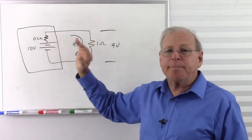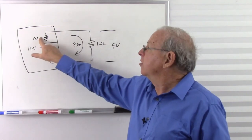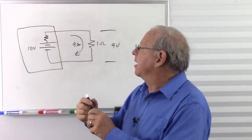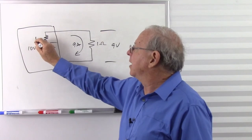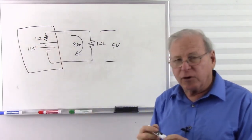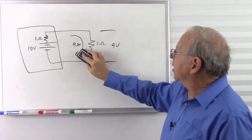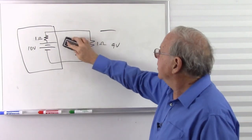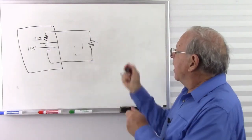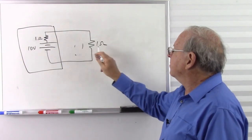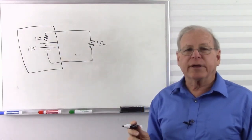As that battery ages and I use up the battery, this internal resistance gets bigger and bigger. So after a while, that internal resistance might get up to a whole ohm instead of a tenth of an ohm. Now what's happened to my current and my voltage? I have my one-ohm load out here, but I have an ohm in series with it.